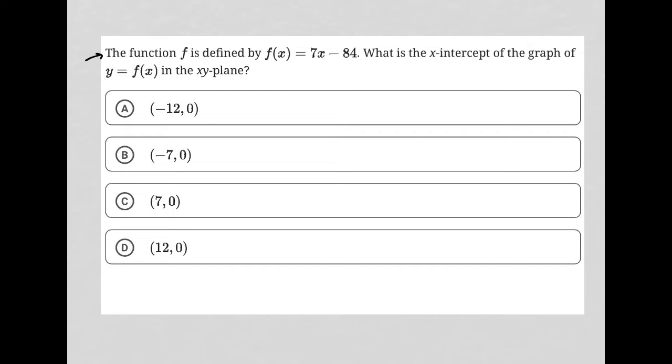This question says the function f is defined by f(x) = 7x - 84. What is the x-intercept of the graph of y = f(x) in the xy-plane?